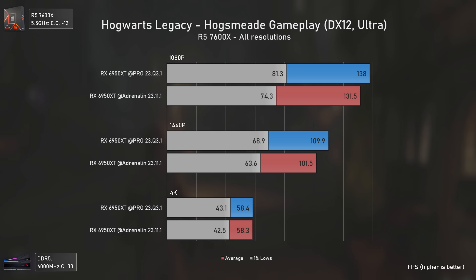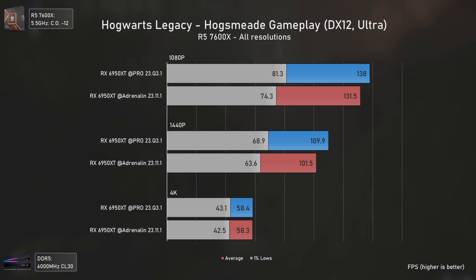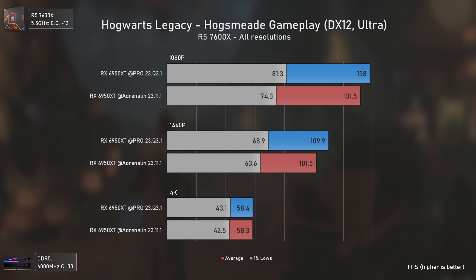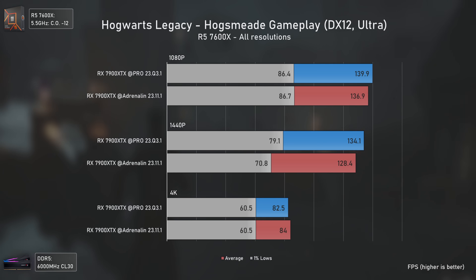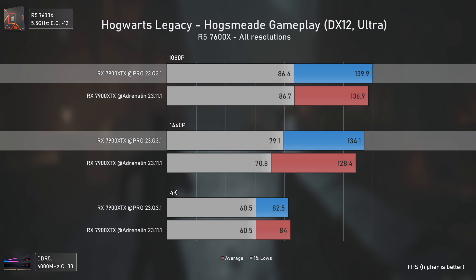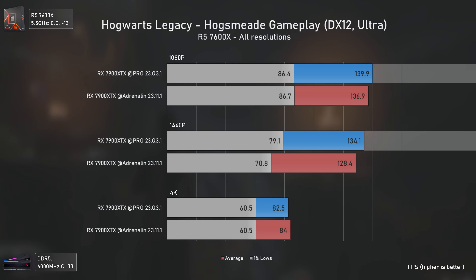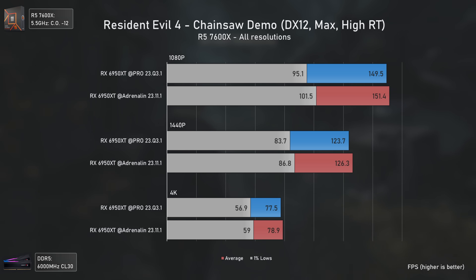That also applies to Hogwarts Legacy, and at this point I'm starting to think the Pro drivers just work better with Unreal Engine games — RoboCop uses Unreal Engine 5, and Hogwarts Legacy uses Unreal Engine 4. Here the Pro drivers are faster than the Adrenaline ones at 1080p and 1440p, where CPU overhead kicks in, making it seem like they handle high FPS numbers more efficiently. With the RX 7900 XTX the differences are smaller, though Pro drivers still lead at 1080p and 1440p by up to 4% averages and 12% in 1% lows.